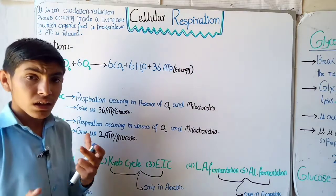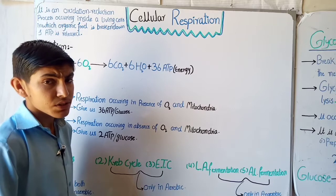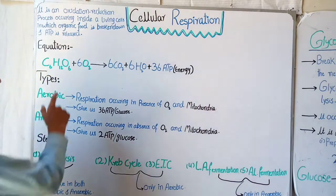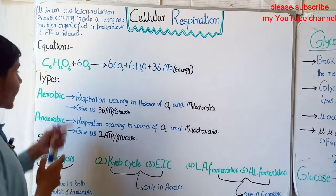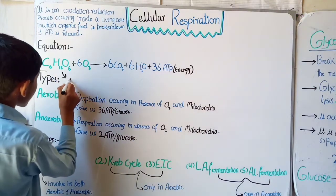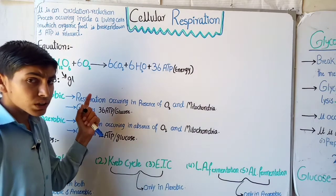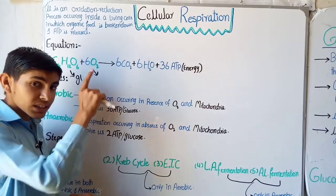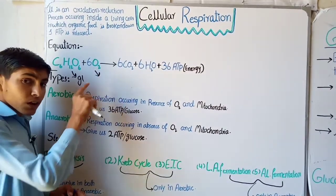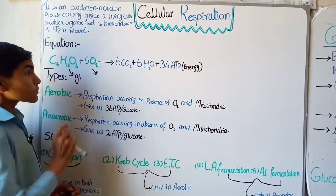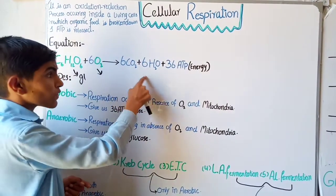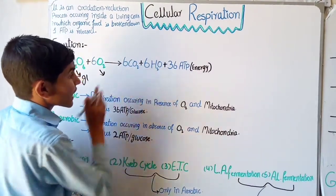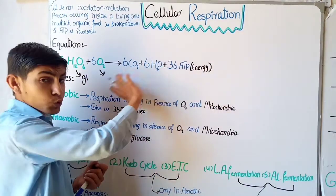Now let's talk about the equation. It is C6H12O6 plus 6O2. The glucose is synthesized during the process of photosynthesis, while the oxygen is released during the light reaction — by the splitting of the water molecule we gain O2. In the products, it gives us 6CO2 plus 6H2O and also 36 ATP energy.